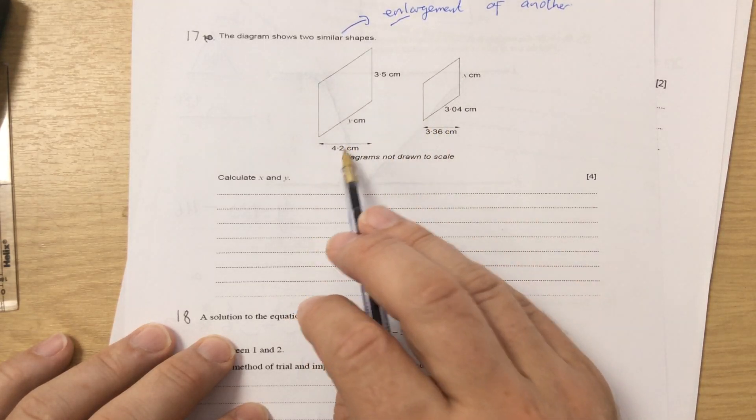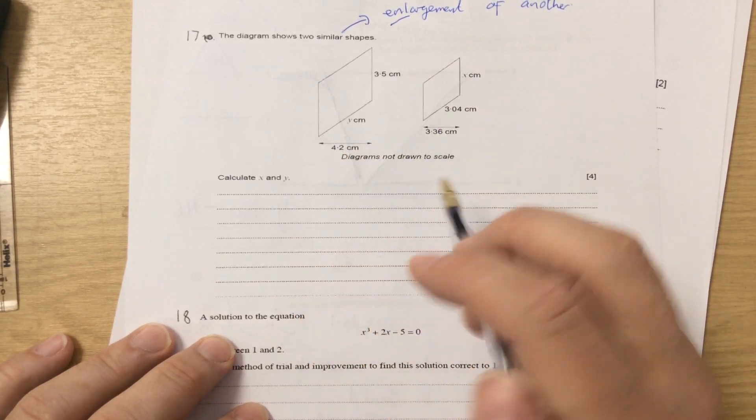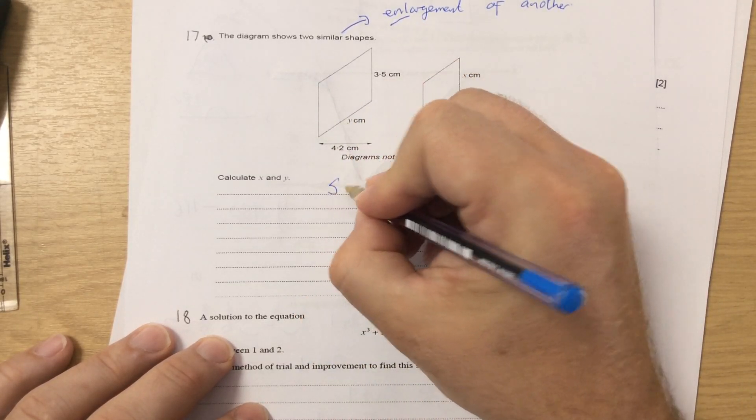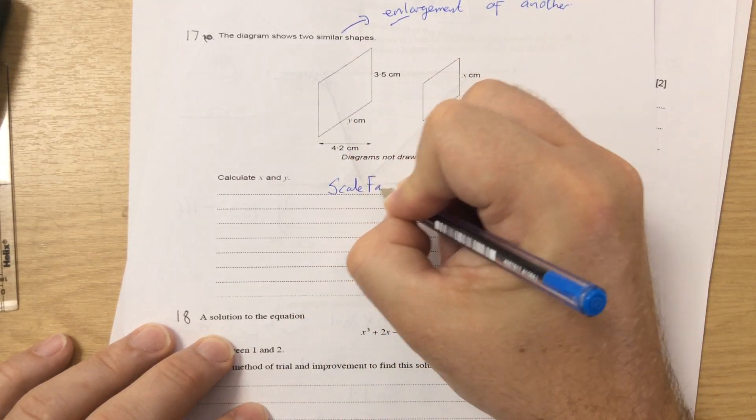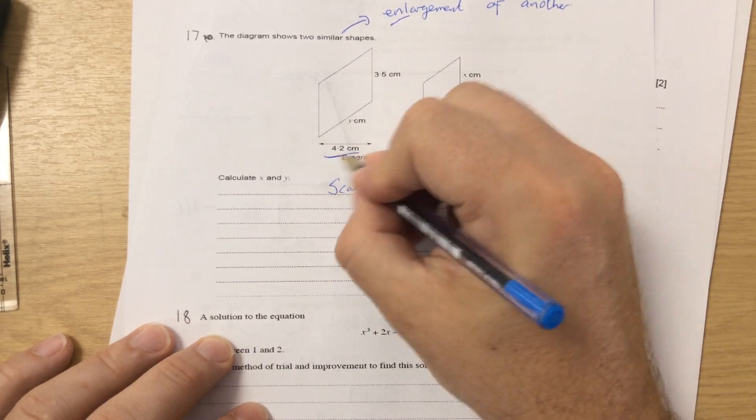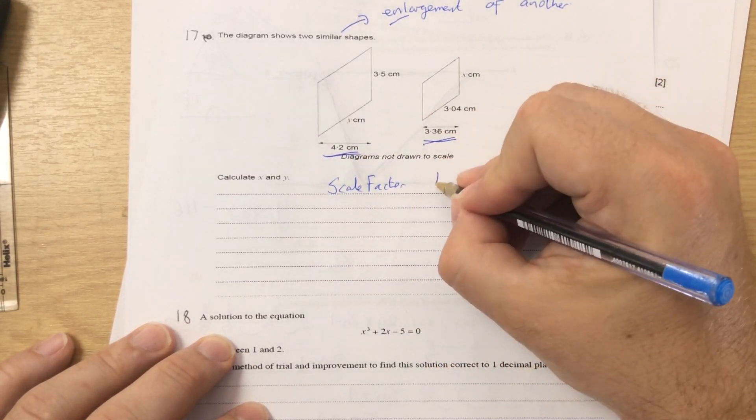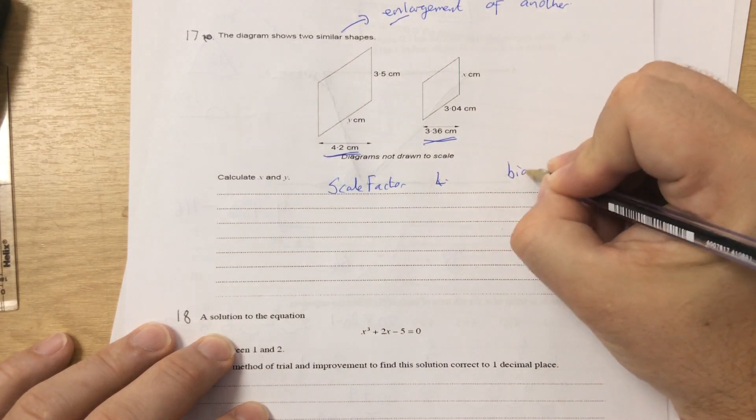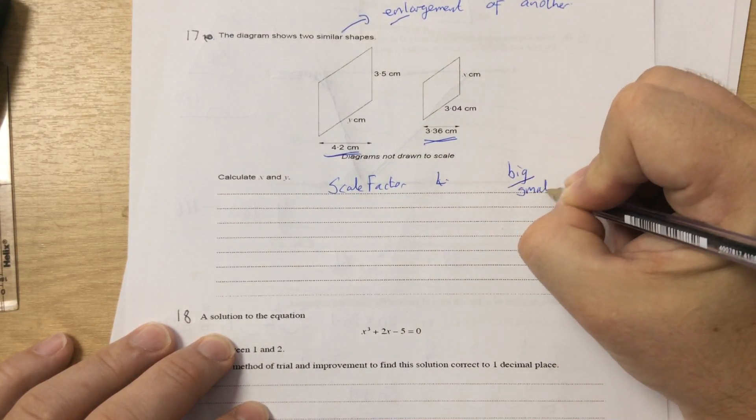This side, the shape 1, is bigger than shape 2. So what I've got to do is work out the scale factor. So I'm looking at them two numbers because they are both given.